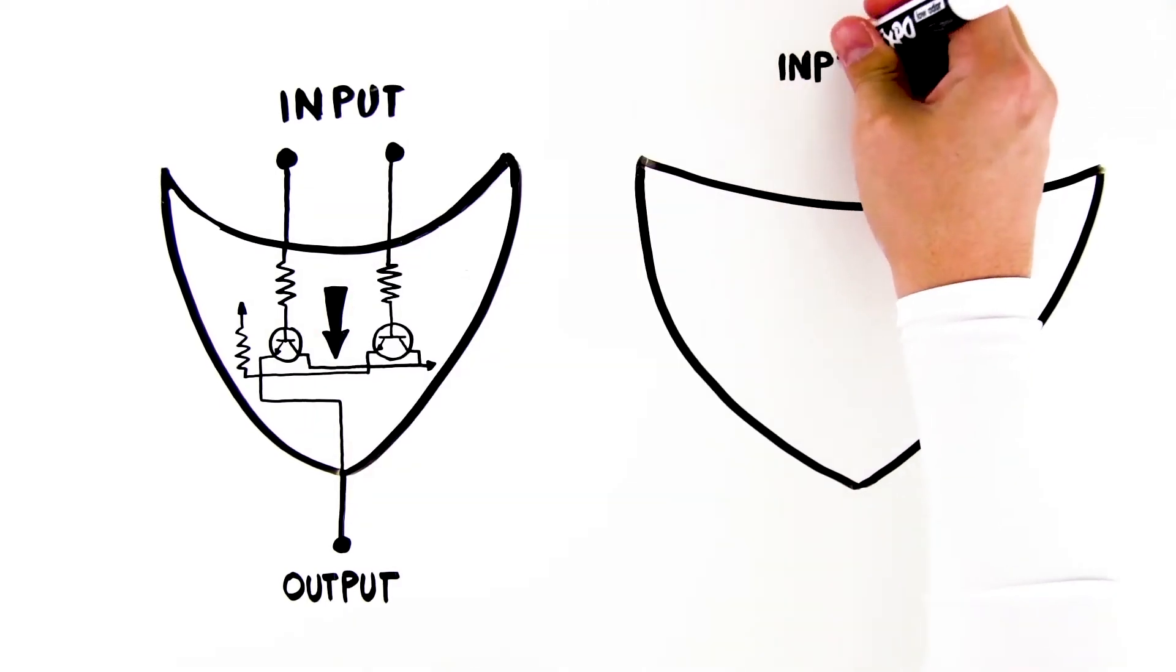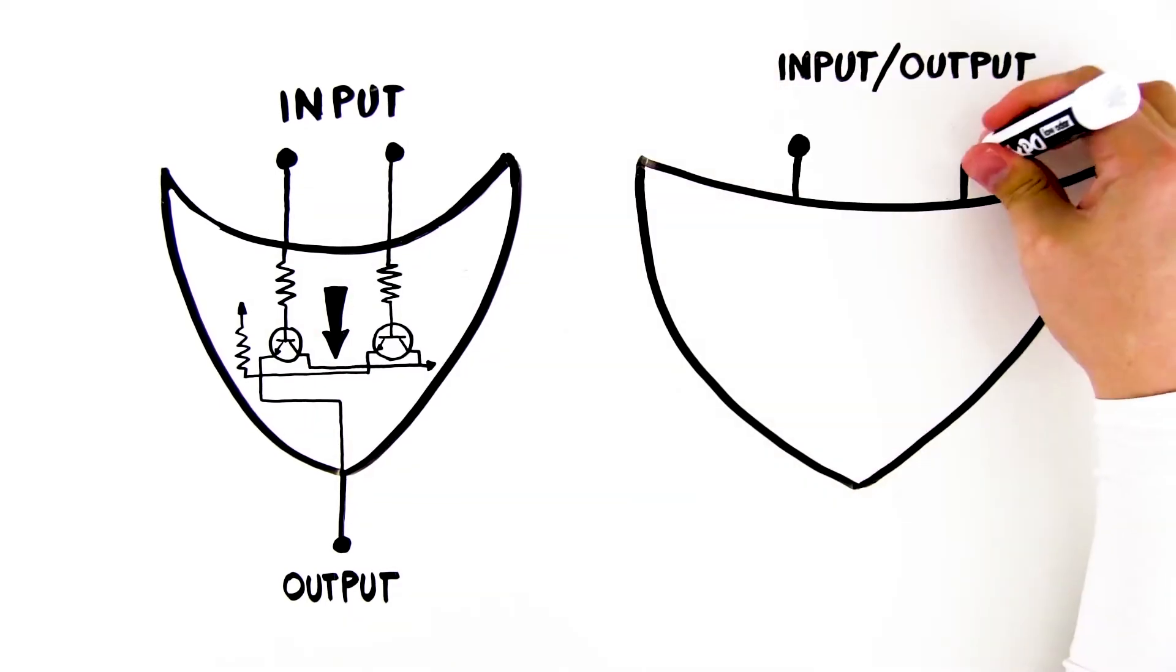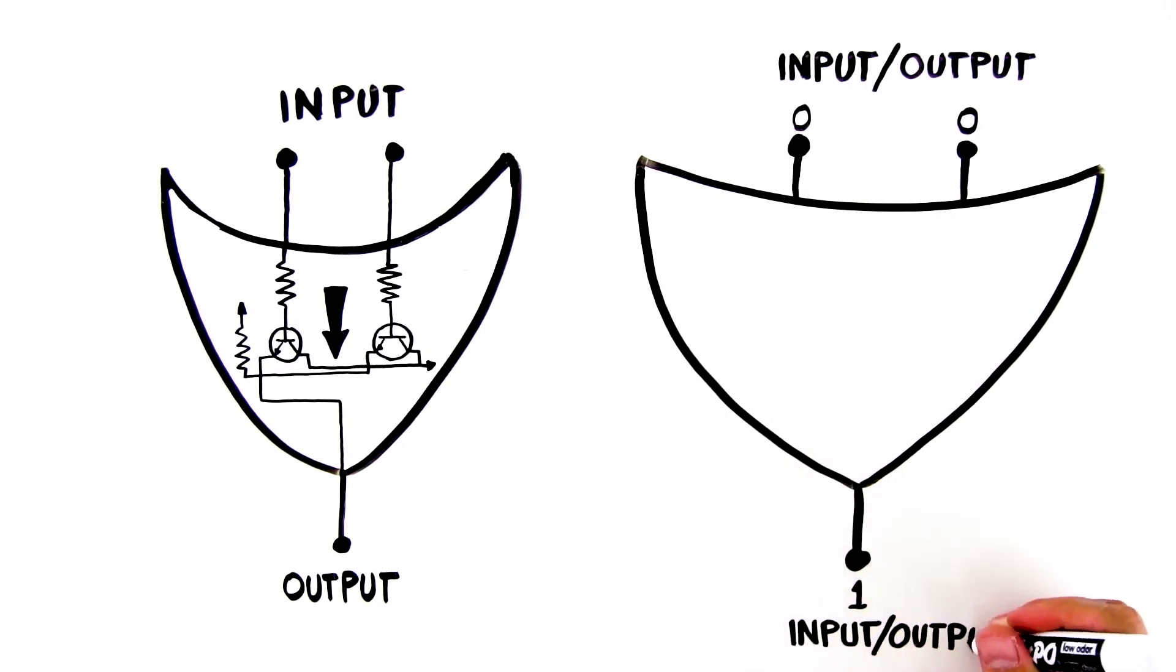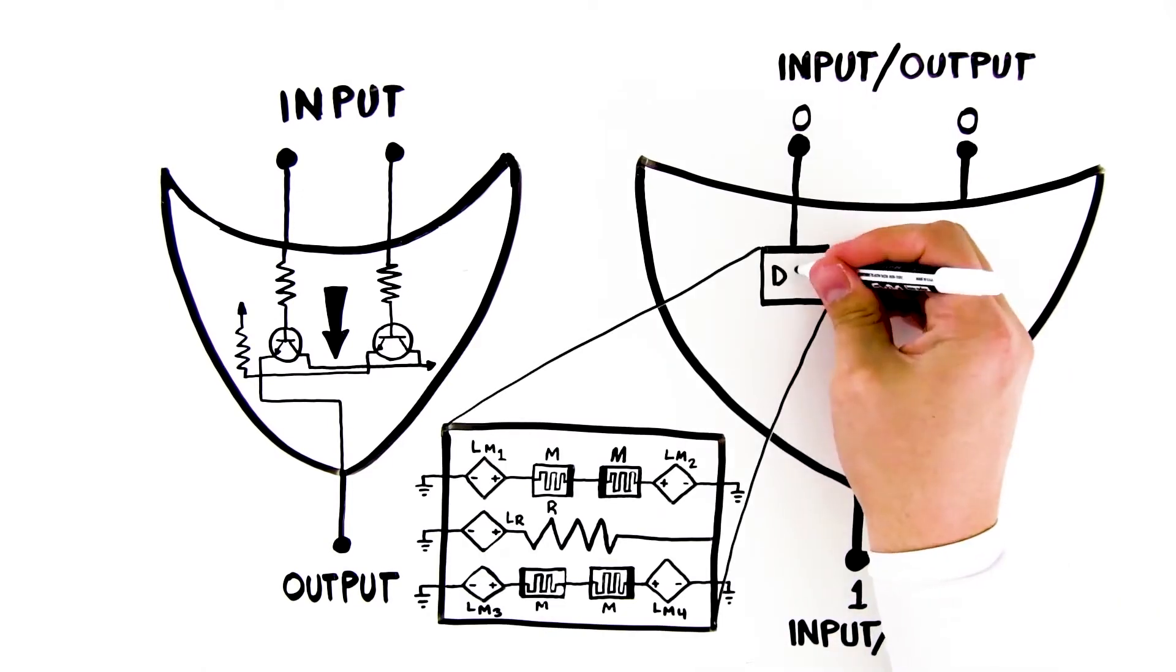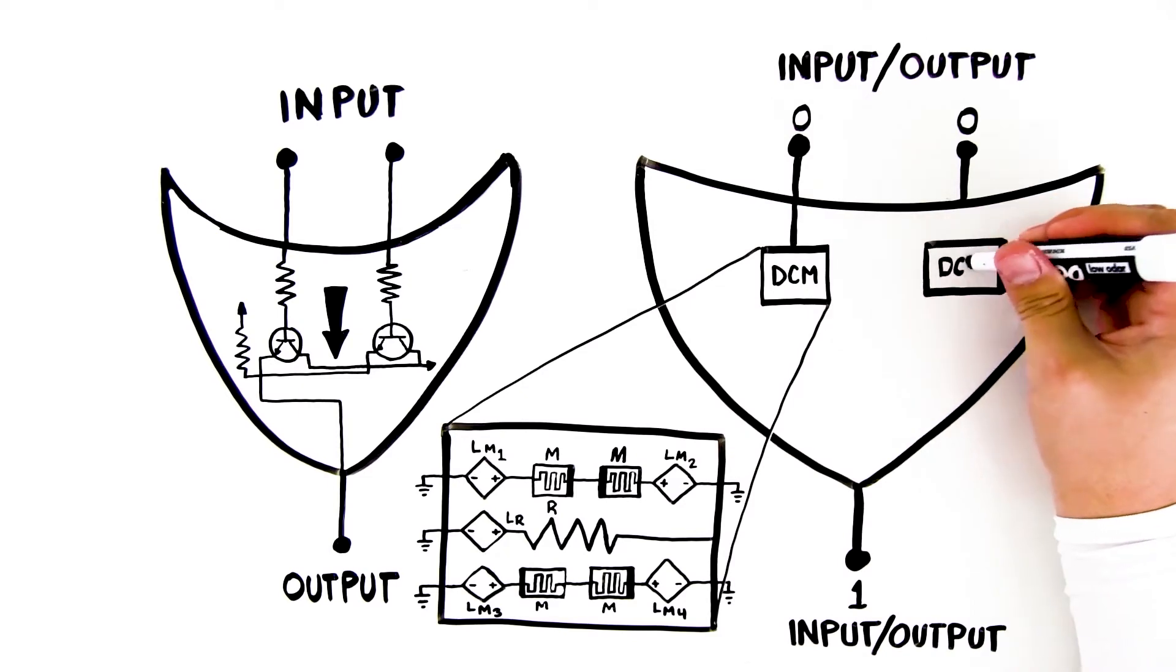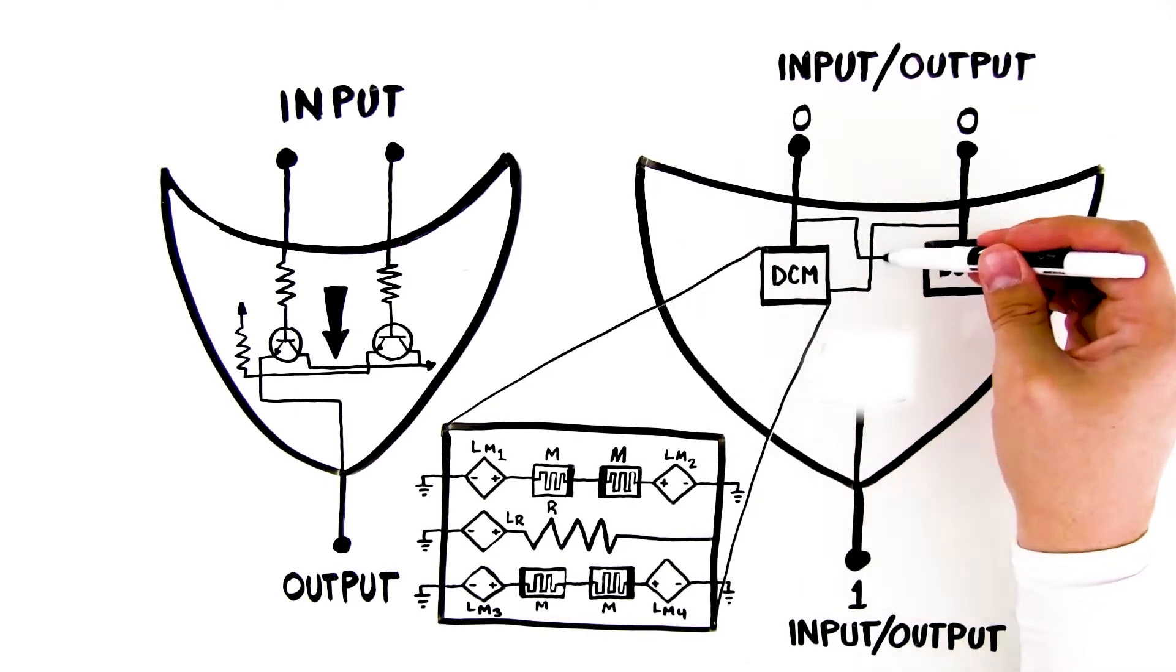Instead, with a MEM computing self-organizing OR gate, all the terminals are input and output or I-O. MEM computing gates are bi-directional. We see a DCM or dynamic correcting module connected to each terminal.